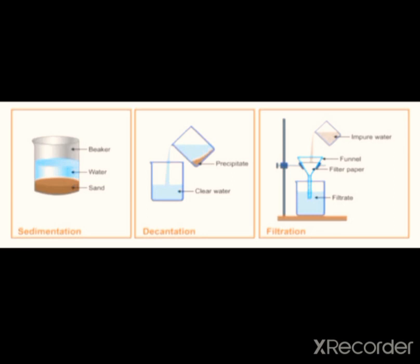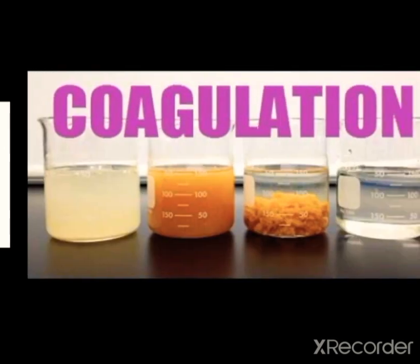Even the strainer we use to separate tea from tea leaves is a type of filter — the 'channi' used every morning is also a form of filtration. The insoluble solid left behind in the filter is known as residue, while the liquid that passes through the filter is called filtrate.